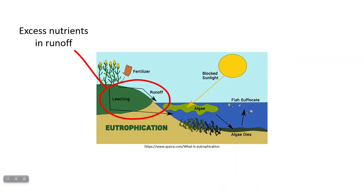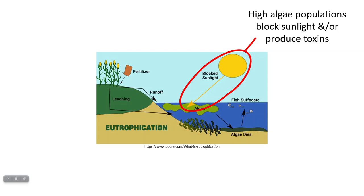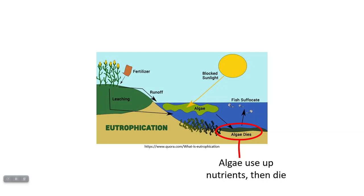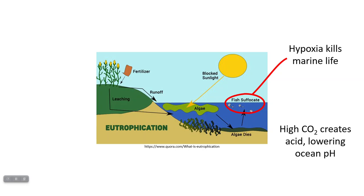Eutrophication is something you may have to explain in a free-response question, so know the steps. Nutrients run off into water, causing high nutrient levels that trigger algal blooms — a huge population expansion of algae. These can block sunlight or produce toxins, killing native plants. Once the algae use up nutrients and die, decomposers use up all dissolved oxygen, creating hypoxic conditions where marine life suffocates. Also, CO2 produced during decomposition creates acid that lowers ocean pH.